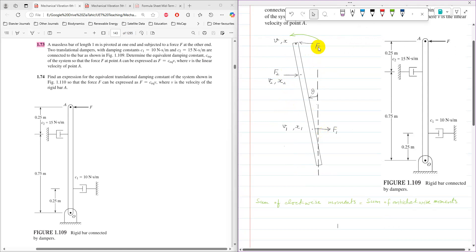The moment due to force F is F times 1 meter. F1 times 0.25 is one clockwise moment, F2 times 0.75 is the second, and F times 1 is anti-clockwise. This gives us equation 1 from the condition of equilibrium.